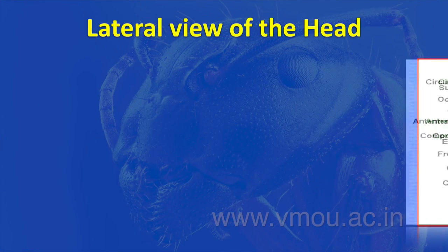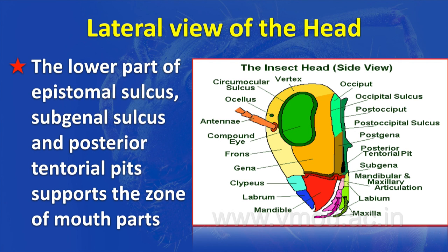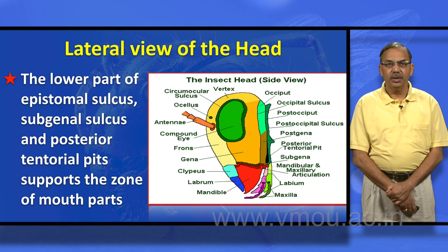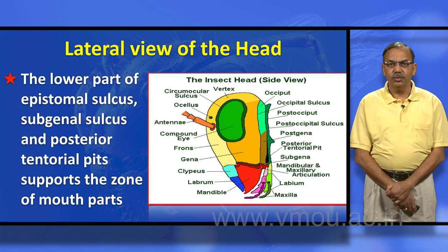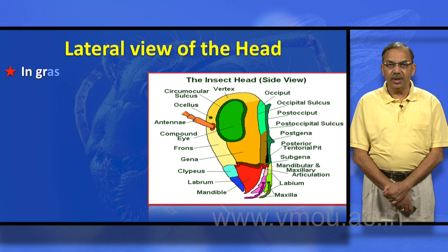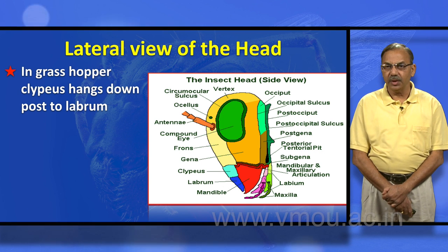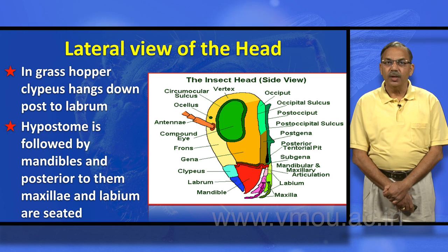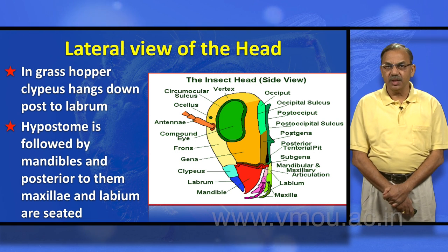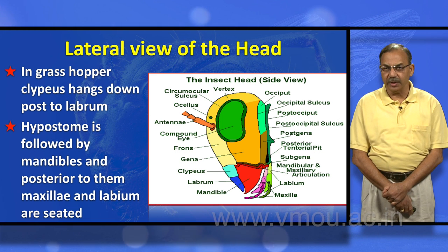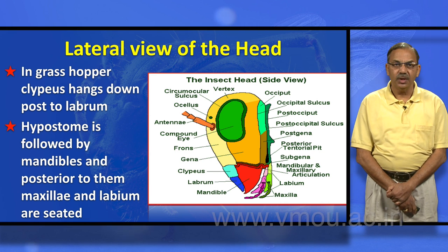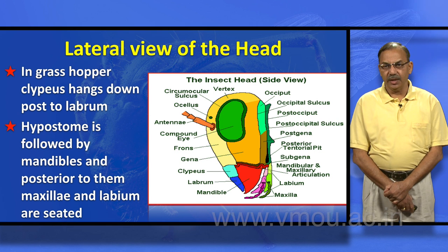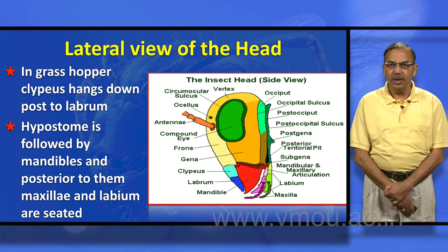In the lateral view of the head, the lower part of the epistomal sulcus is just above the labrum, the subgenal sulcus is just above the mandible, and the posterior temporal pits support the zone of mouth parts. In a grasshopper, the clypeus hangs down posterior to the labrum. The hypostome is followed by the mandibles, and posterior to them the maxilla and labium are seated.